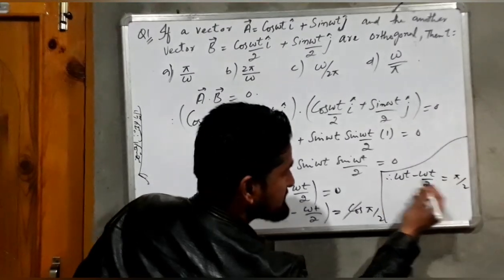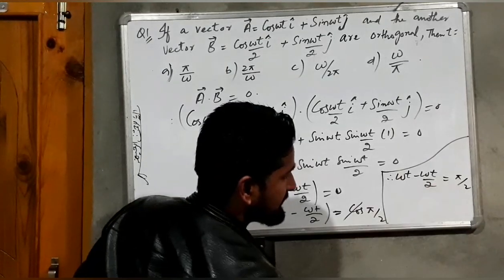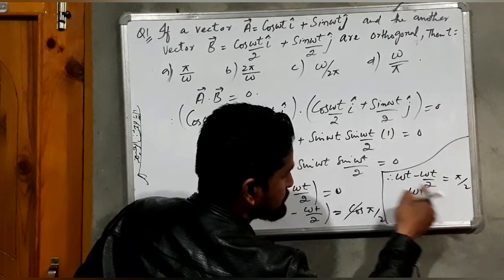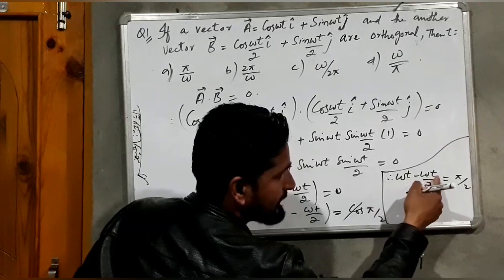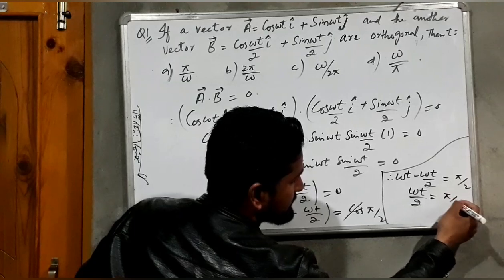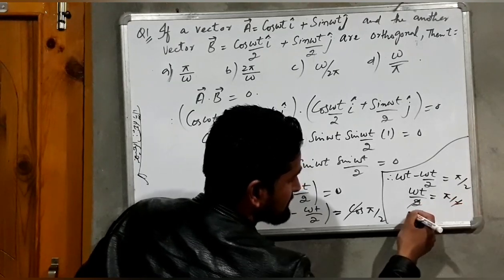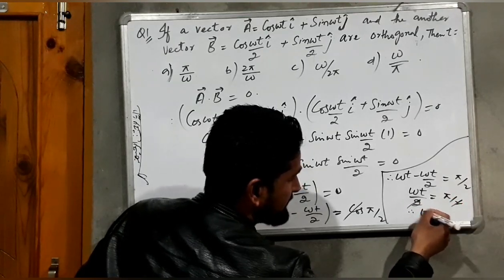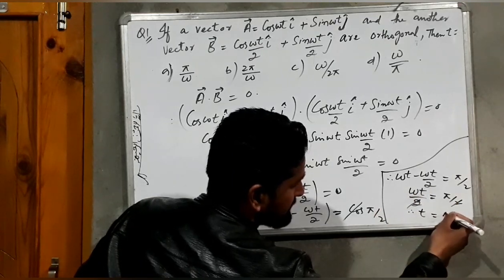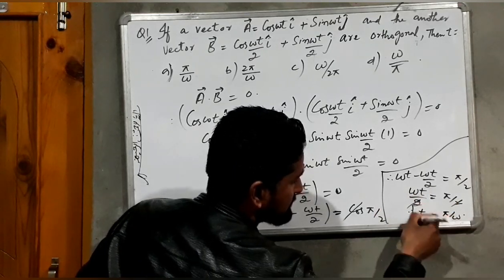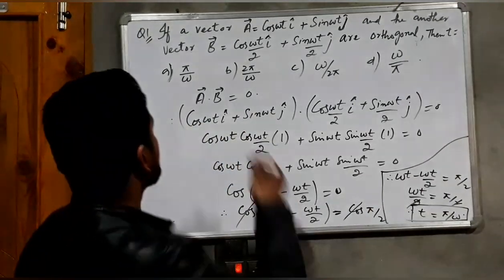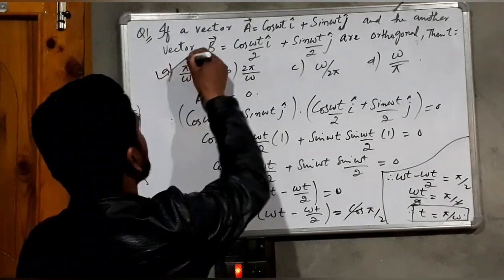Now simplifying: ωt − ωt/2 equals ωt/2, because (2ωt − ωt)/2 = ωt/2, which equals π/2. The 2s cancel, so t equals π/ω. Therefore option A is the correct answer.